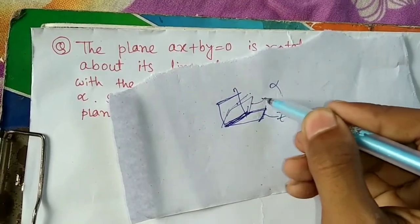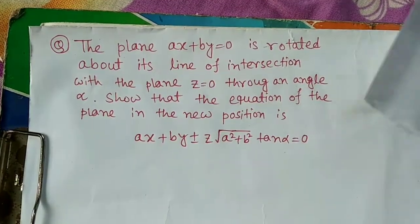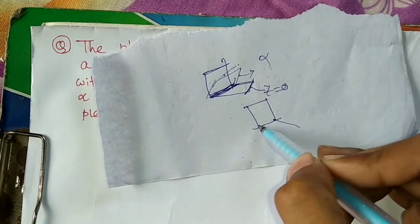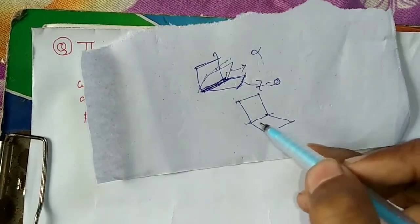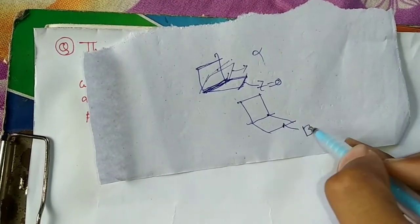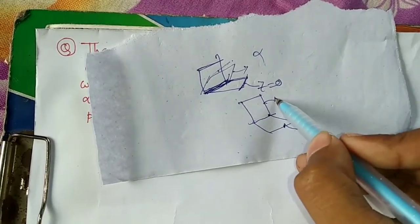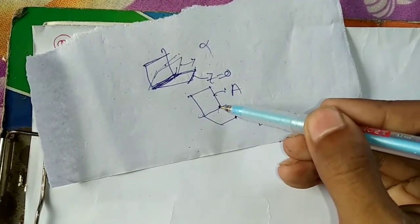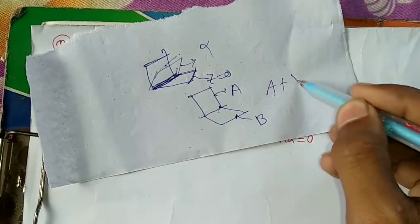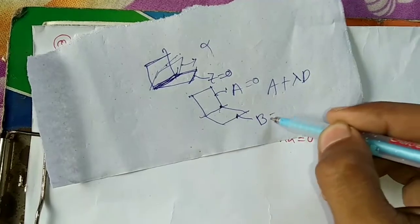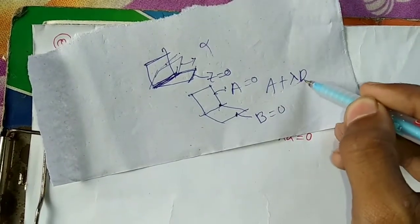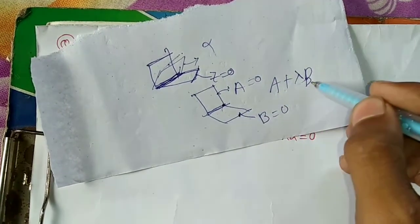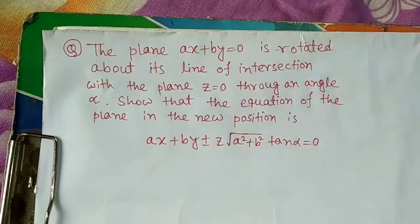The new position gives us this equation. Now, if there are two planes passing through the same line of intersection, we can write the equation of any plane through that intersection as P1 plus lambda times P2 equals to 0. We will use this concept here.